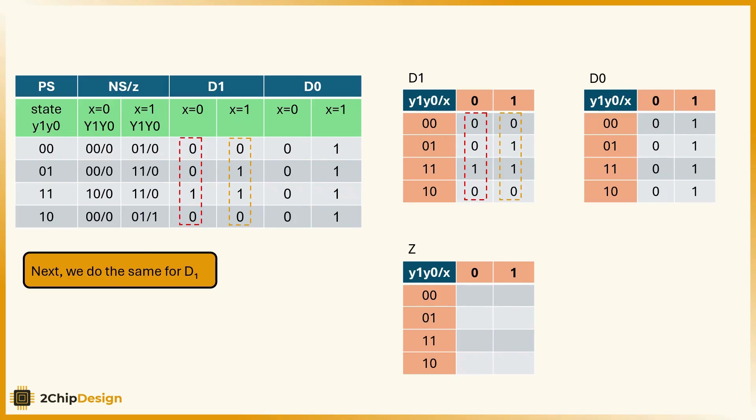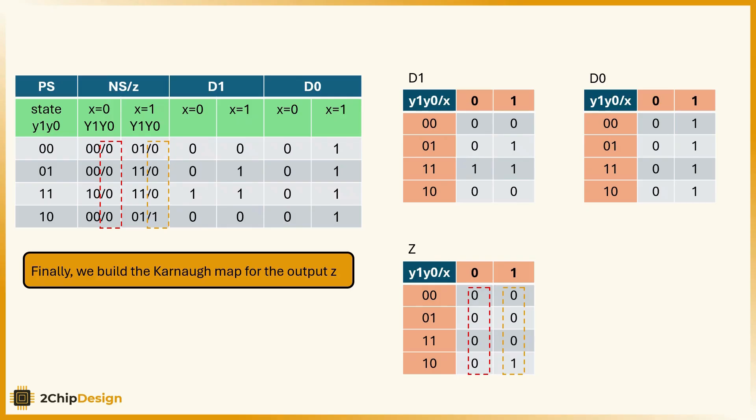Next, we do the same for D1. Finally, we build a Karnaugh map for the output Z.